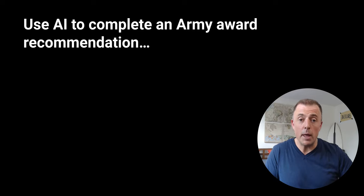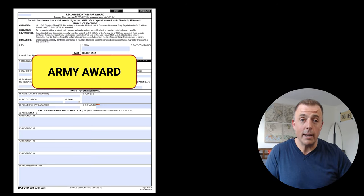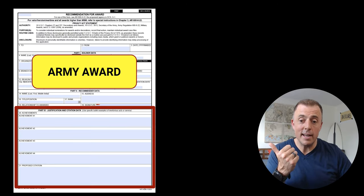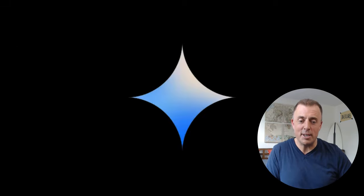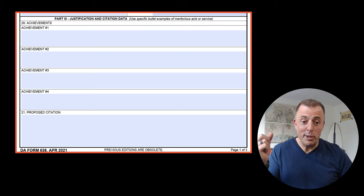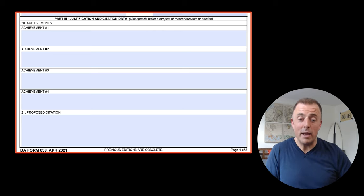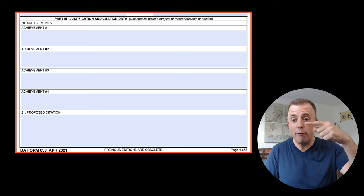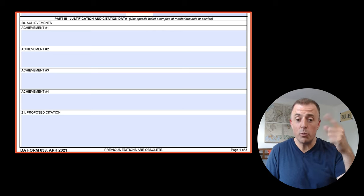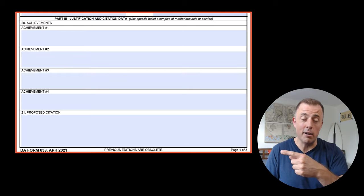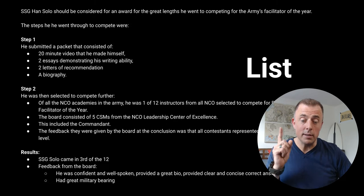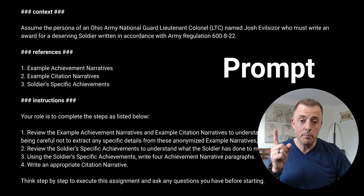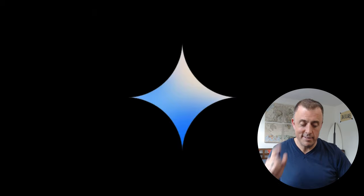Use AI to complete an Army award recommendation. We're going to take this blank form and make it look like a completed form using a little bit of AI magic. The blank sections we need to fill out are achievements one through four and the proposed citation — the achievement narratives and citation narrative. We're going to use examples, a list of the soldier's achievements, a prompt, and magic. Let's jump in.